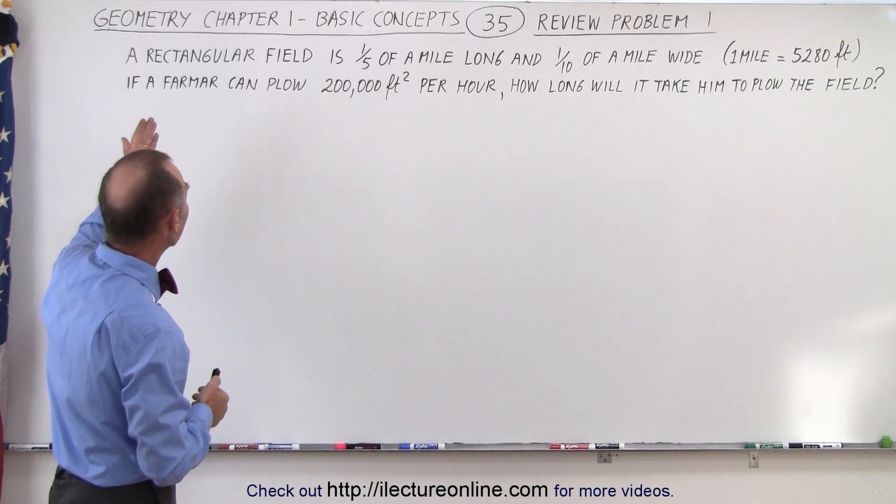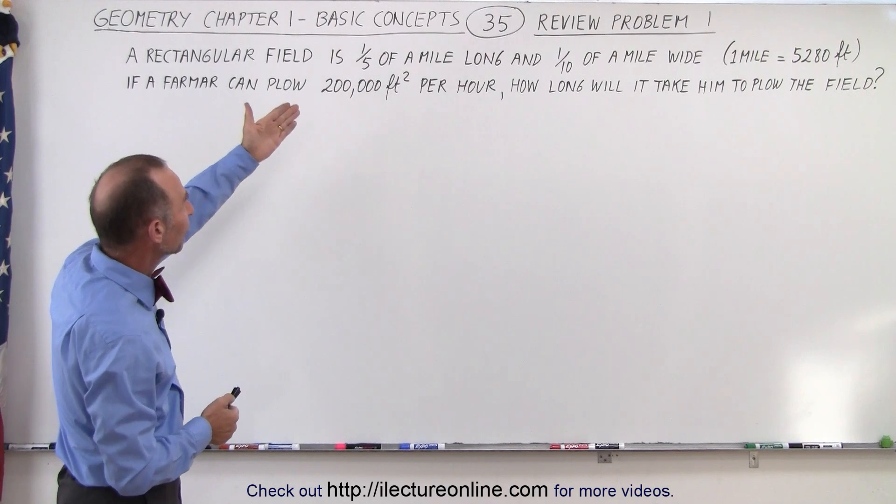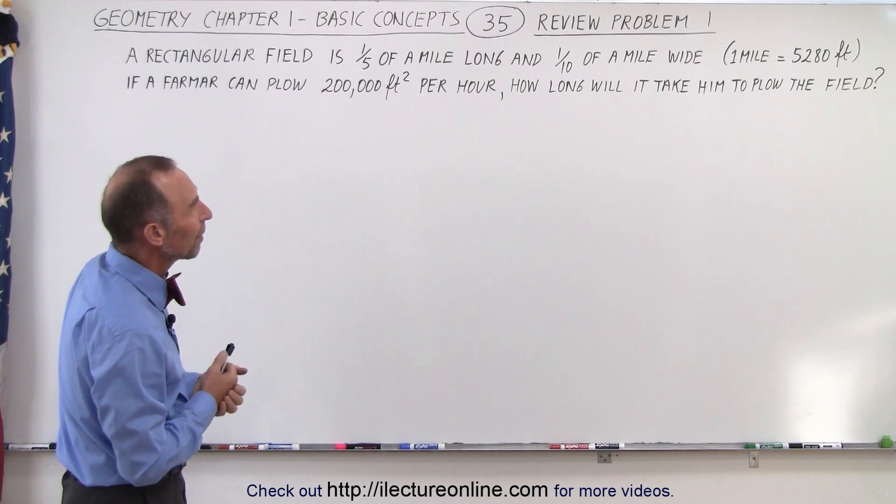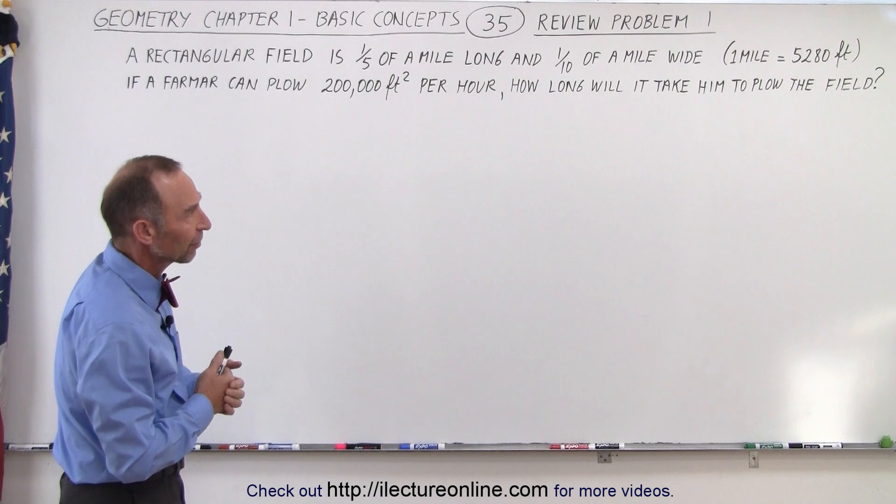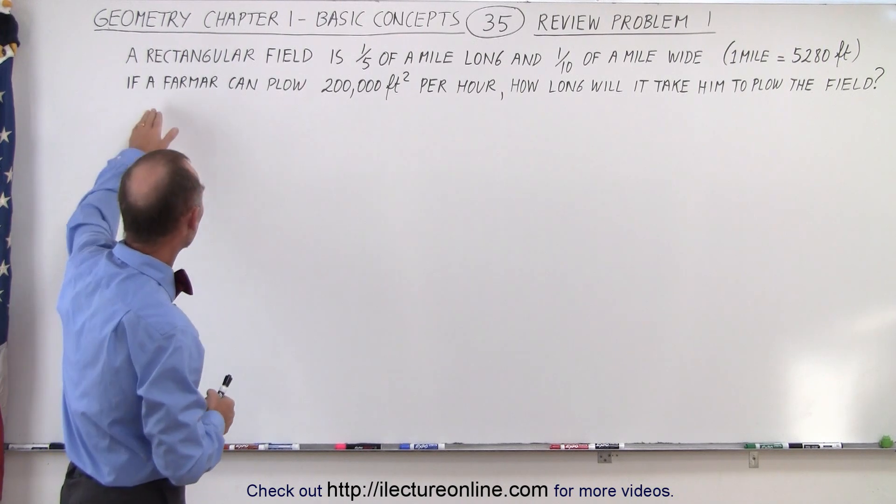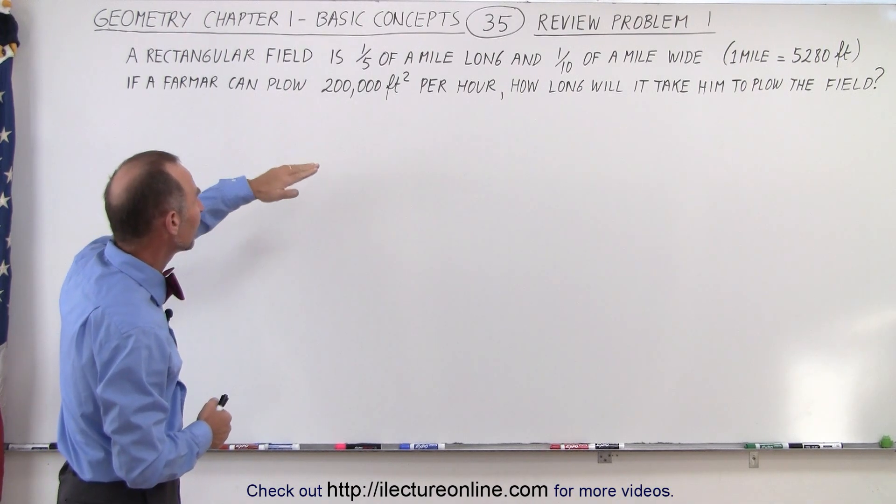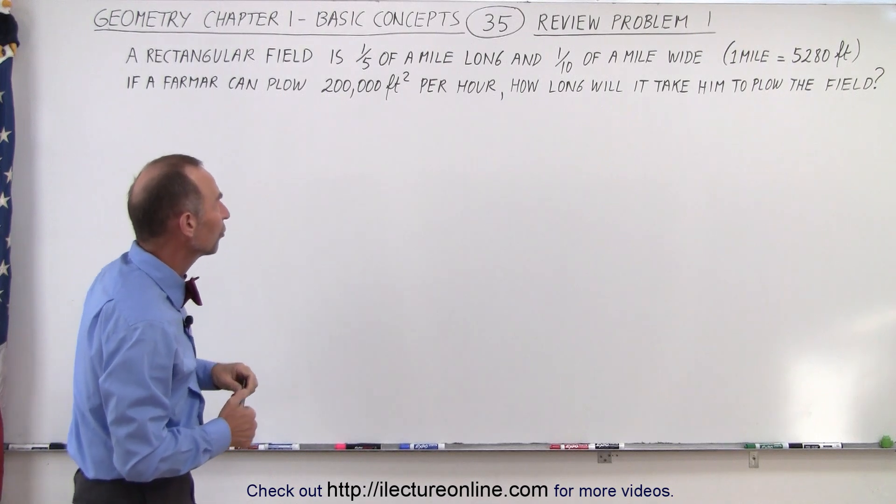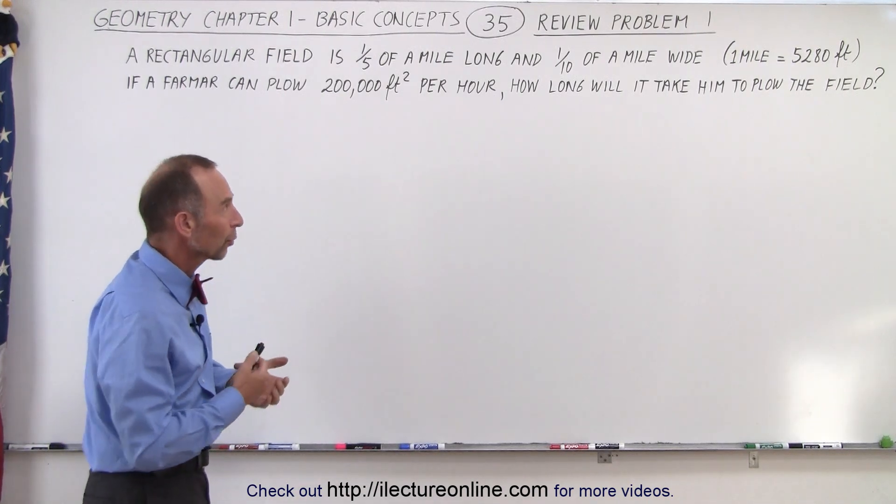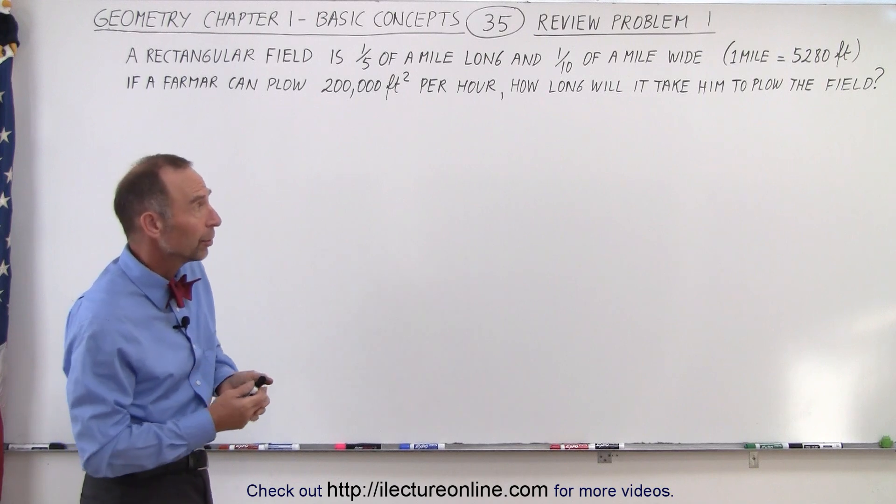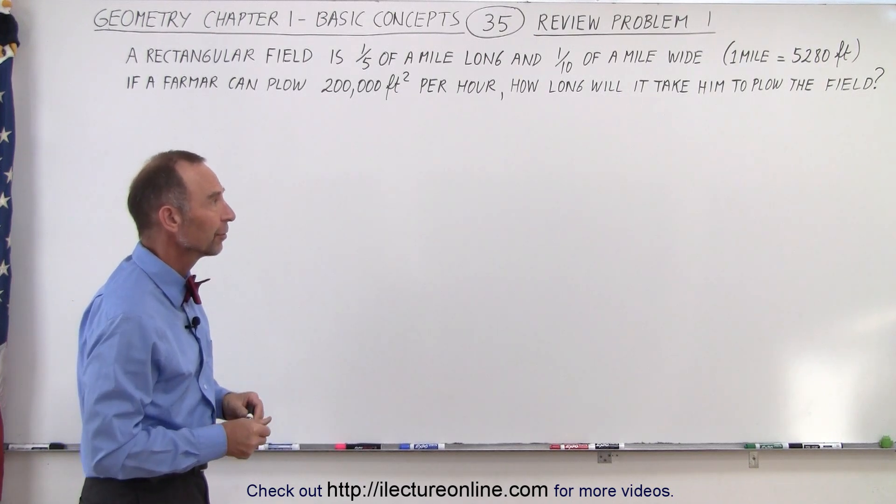So first of all we have a rectangular field which is one-fifth of a mile long and one-tenth of a mile wide. A mile is 5,280 feet and we're told that the farmer can plow his field at a rate of 200,000 square feet per hour. The question then is how long will it take the farmer to plow the entire field?